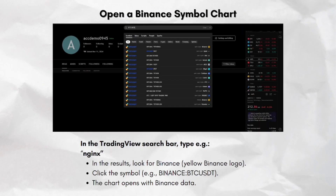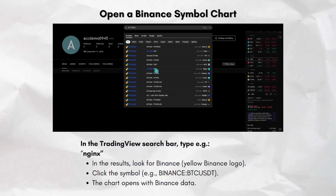Then in the TradingView search bar, type in the symbol you want — for example, BTCUSDT. In the results, look for the Binance or yellow Binance logo and click the symbol, for example Binance BTCUSDT. The chart will open with Binance data, so this alone lets you watch Binance prices and indicators.